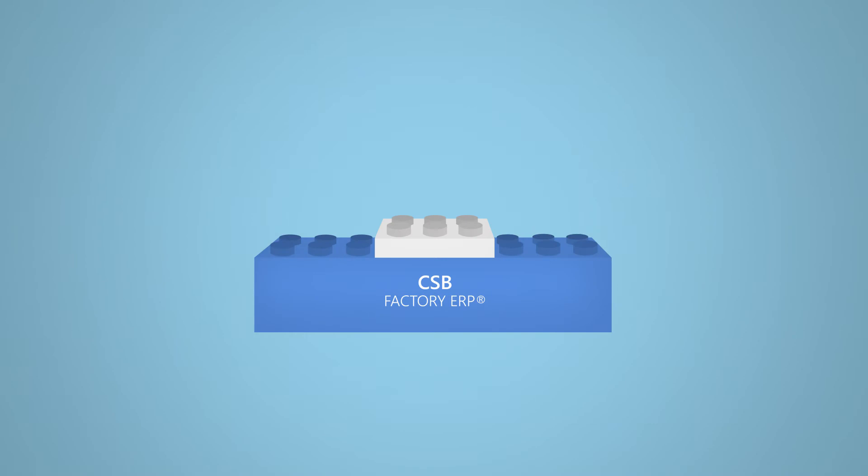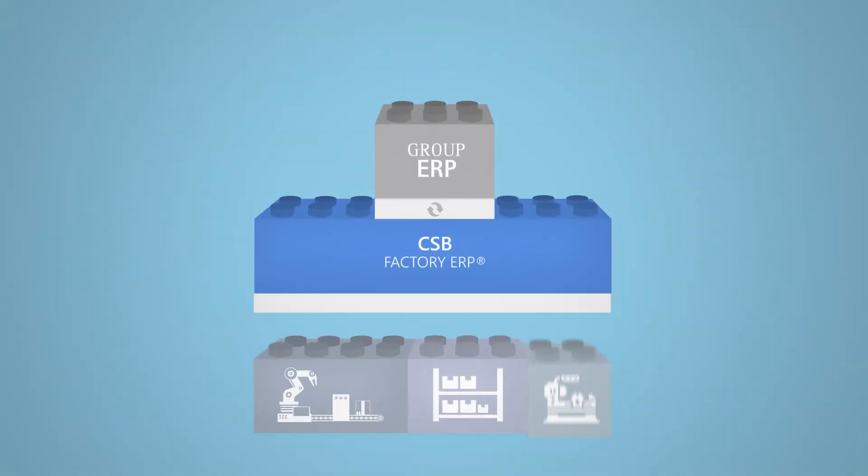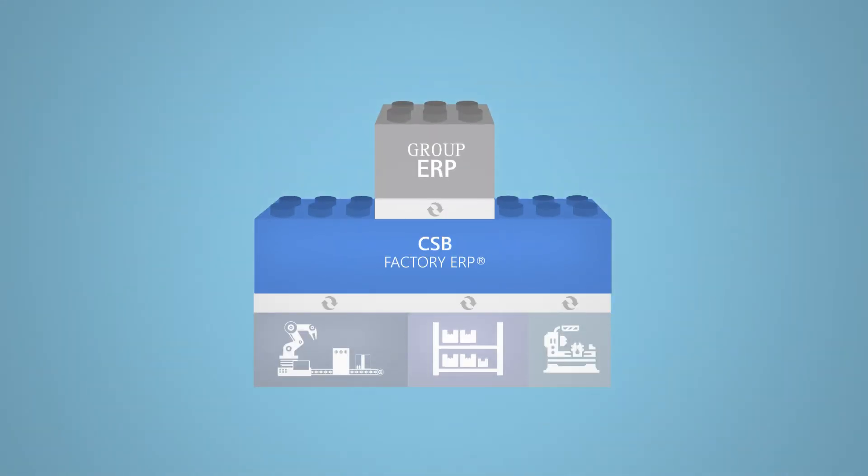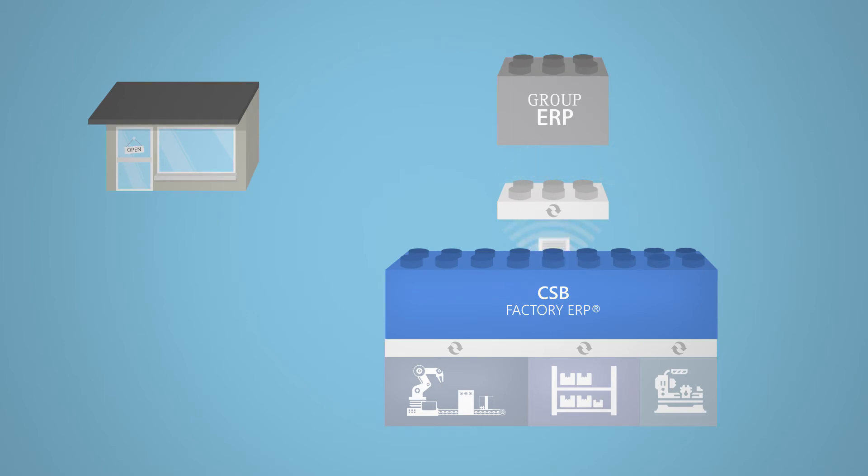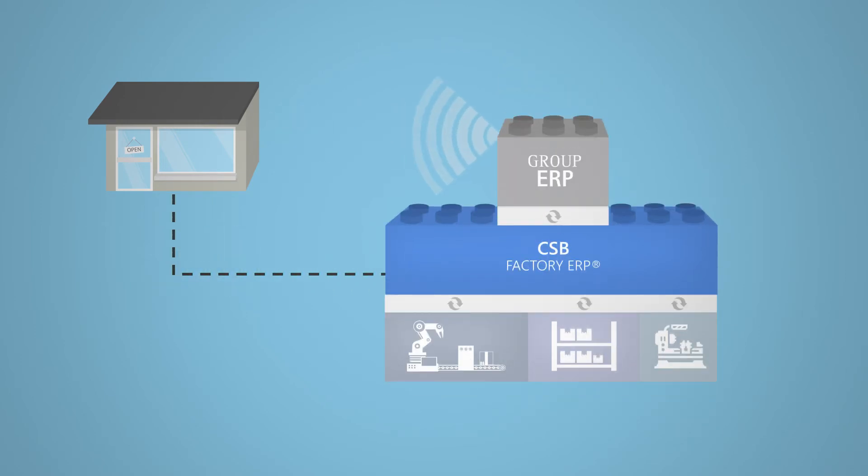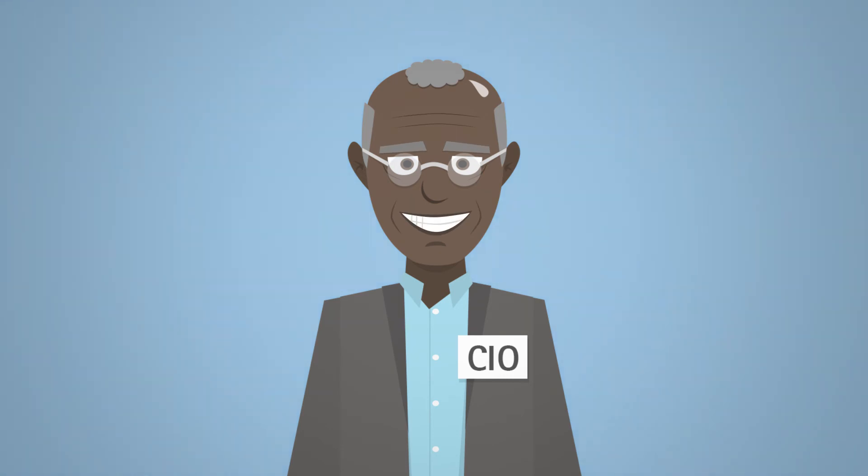With its standard interfaces to the group ERP, and to the machines and equipment, the factory ERP can be easily integrated and serviced. Order processing is still handled by the group ERP, but it can also be done directly in the factory ERP. This makes Mr. Mpenza happy.